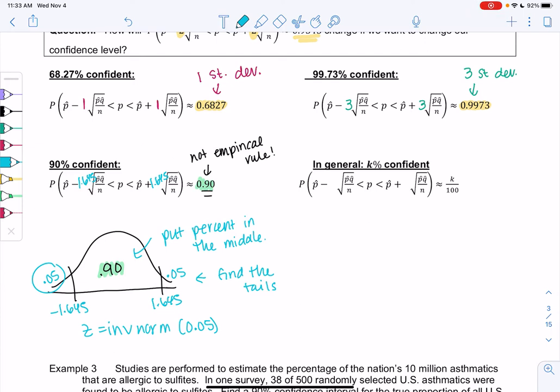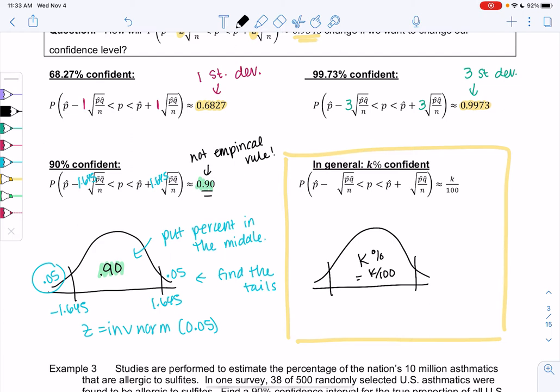So how are we going to do this in general? Because we're not going to always have 90% either. So in general, this is probably the most important formula. We're going to have k percent. So k percent goes in the middle. Or k out of 100 would be decimal form. You'll find the tails. So you can use the table or inverse norm to find the tails. So table or inverse norm of the tail to find the z-score. And so in general, the formula will just be p-hat minus some z-score, I'll call it z-star, times the standard deviation up to p plus z-star times the standard deviation. So the z-score just changes depending on the confidence level.